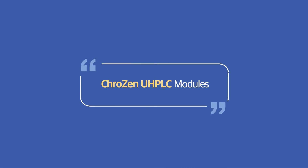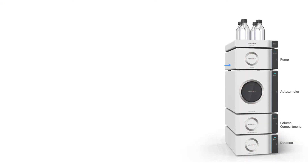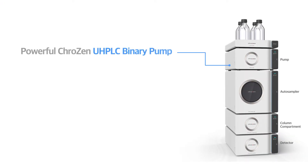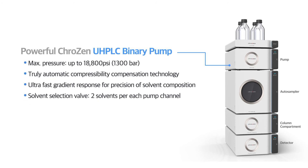Let's see what kind of modules are available in Crozen UHPLC. The powerful Crozen UHPLC binary pump can handle high pressure up to 18,800 psi and provides accurate and stable flow rate using truly automatic compressibility compensation technology. It also can deliver precise solvent composition with ultra-fast gradient response.